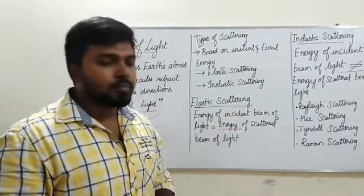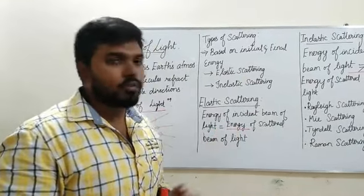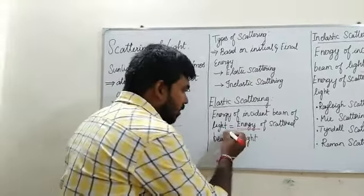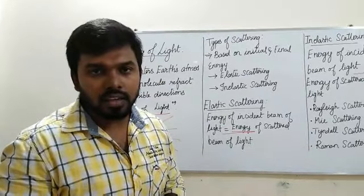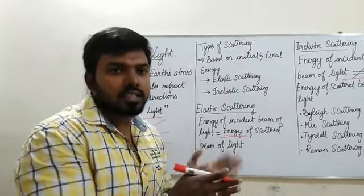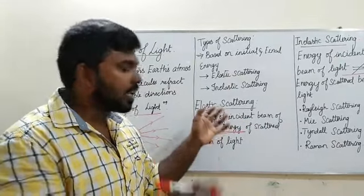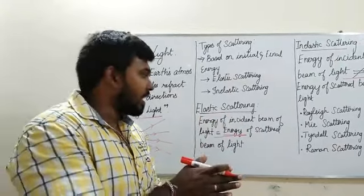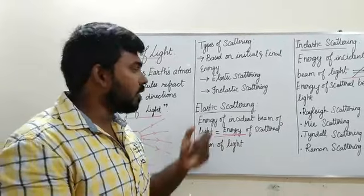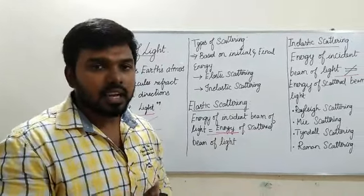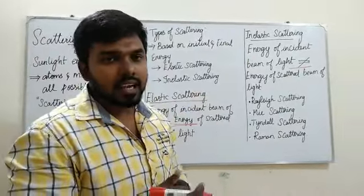In elastic scattering, the energy of the incident beam of light is equal to the energy of the scattered beam of light. This means the energy level before scattering and after scattering is equal, and we call this elastic scattering.